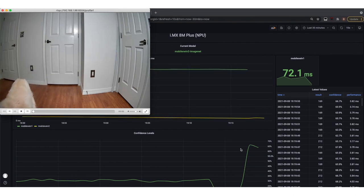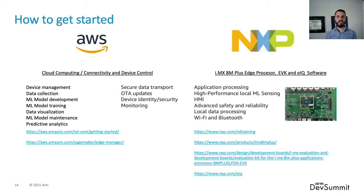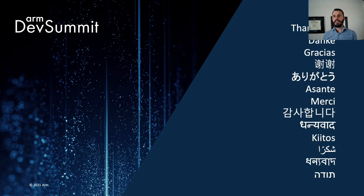That concludes this short demonstration on how you can use Greengrass V2 to manage your edge devices, manage the software on your edge devices, and manage the machine learning models that run at the edge, using the IMX 8M Plus NPU acceleration capability with quantized models to vastly improve performance and confidence levels. To get started using AWS IoT and machine learning services, you can follow the links on the slide to learn about connectivity, device control, machine learning in the cloud and at the edge, and the i.MX 8M Plus Evaluation Kit. Thank you very much for your time — we really enjoyed showcasing solutions from AWS and NXP, and I hope you found this session useful. I wish you a great rest of the ARM Dev Summit 2021.